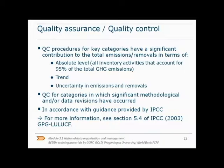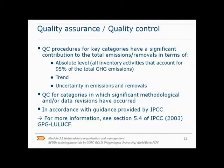Quality assurance and quality control are important aspects of the whole process. Quality control is performed by the inventory development team itself, while quality assurance is performed by people who are not involved in the inventory development process. Quality control procedures need to be implemented for checking the quality of the data included in the greenhouse gas inventory, following the IPCC guidance. This needs to be done for key categories and for individual categories in which significant methodological or data revisions have occurred. Quality assurance and quality control helps to improve transparency, consistency, comparability, completeness, and accuracy in national greenhouse gas inventories.